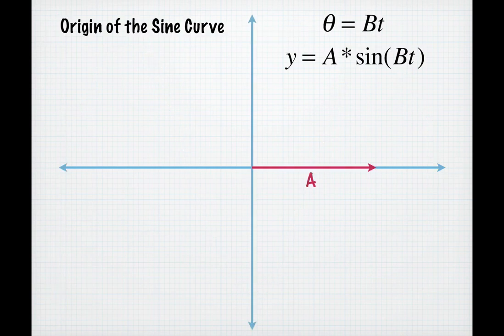Most of the time, though, we don't want theta to be our variable, but we want our variable to be time. So we're going to write theta is equal to bt, where b tells you how quickly this object is sweeping out the circle.